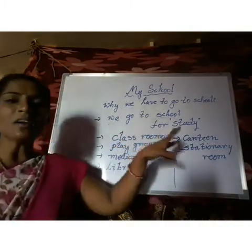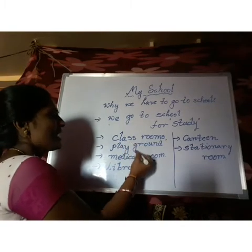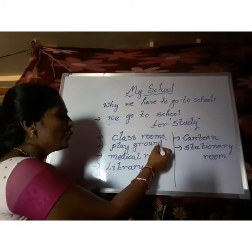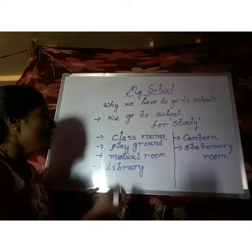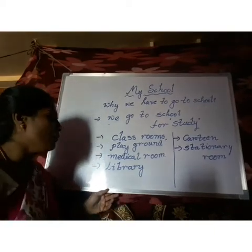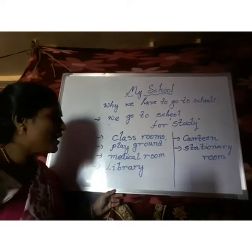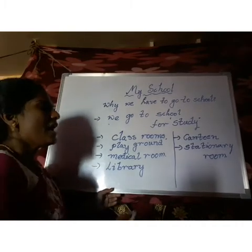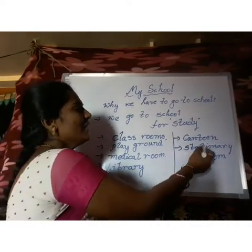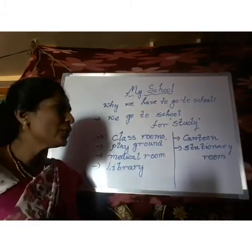These are the parts of a school: classrooms — C-L-A-S-S R-O-O-M-S; playground — P-L-A-Y G-R-O-U-N-D; medical room — M-E-D-I-C-A-L R-O-O-M; library — L-I-B-R-A-R-Y; canteen — C-A-N-T-E-E-N; and stationary room — S-T-A-T-I-O-N-A-R-Y R-O-O-M.